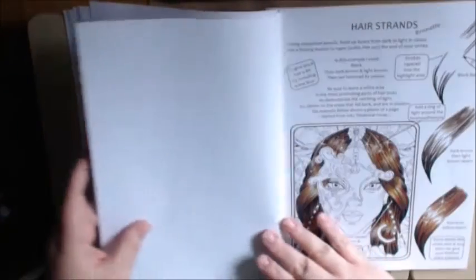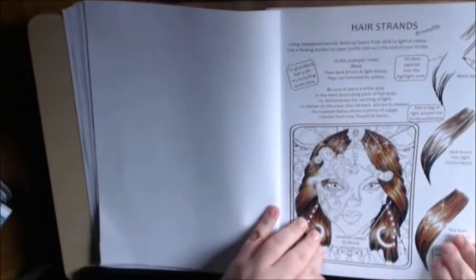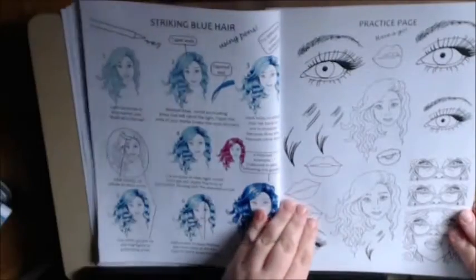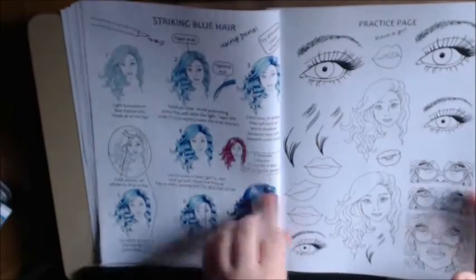Oh, one other thing. On your practice pages, she lays it blank on the back so it won't ruin your book if it soaks through if you're using something. Isn't that great? She thought of everything. There's another practice page. How to do different colored hair.